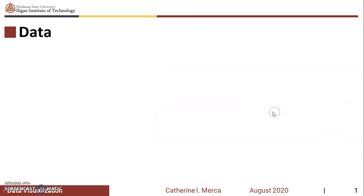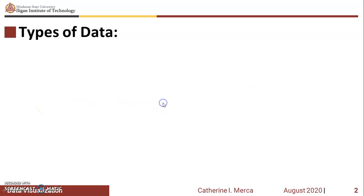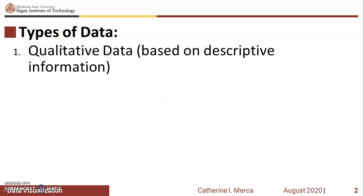What is data? Data is defined as a collection of facts such as numbers, descriptions, measurements, and observations. Data itself is a result of research. There are several types of data. We have what we call qualitative data, which are based on descriptive information. For example, we have boys, girls, urban or rural. Those are qualitative data.